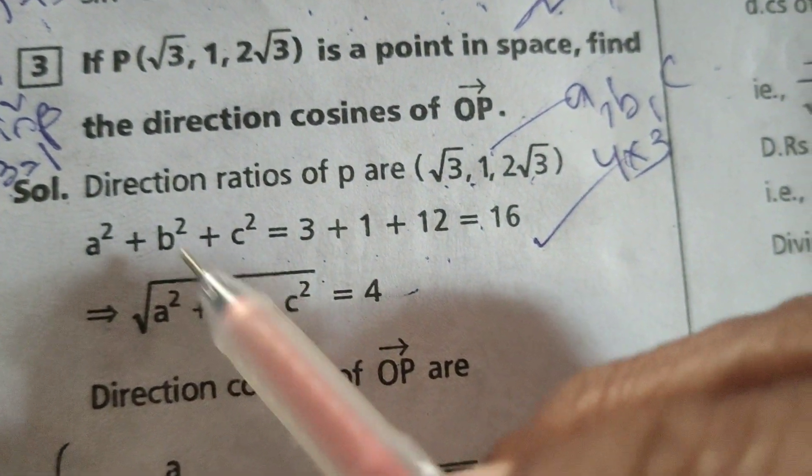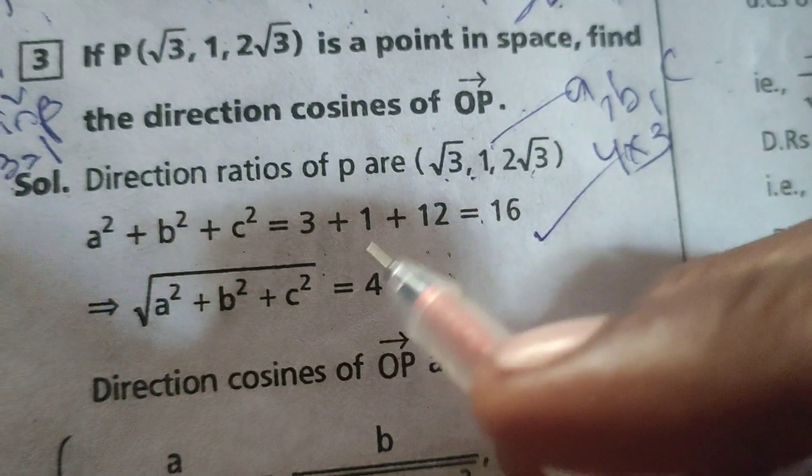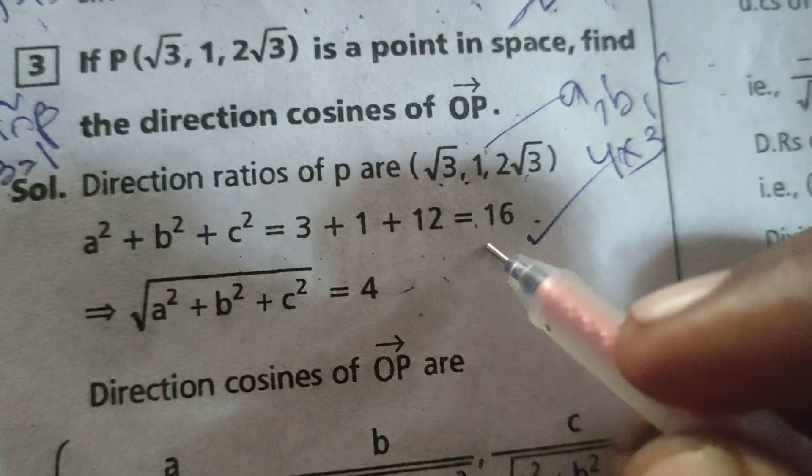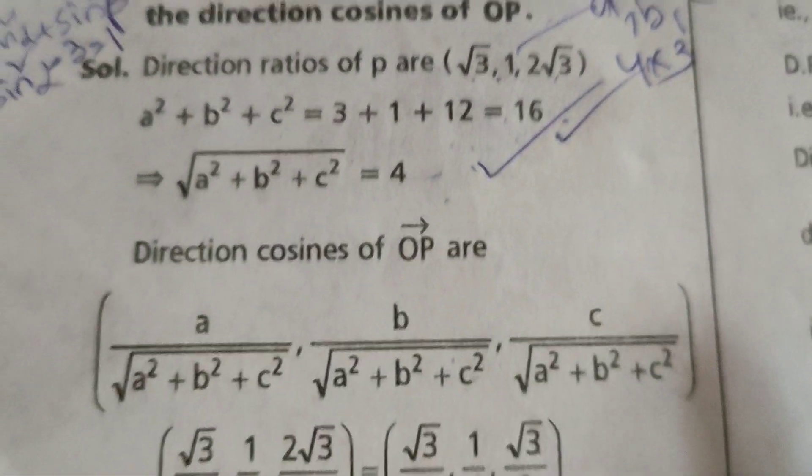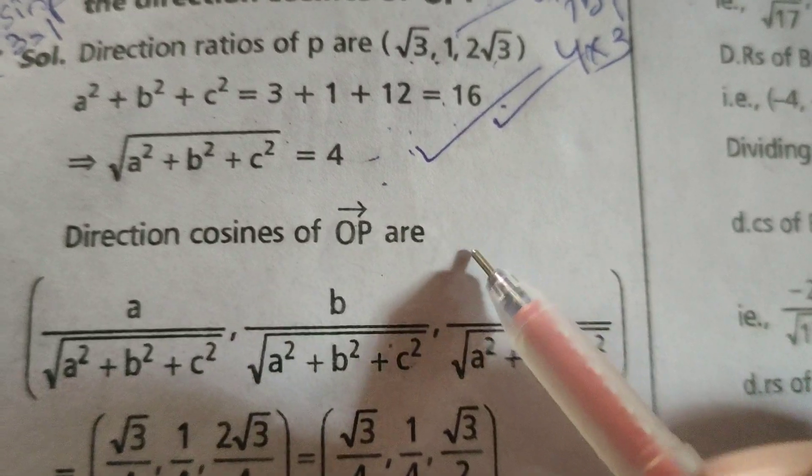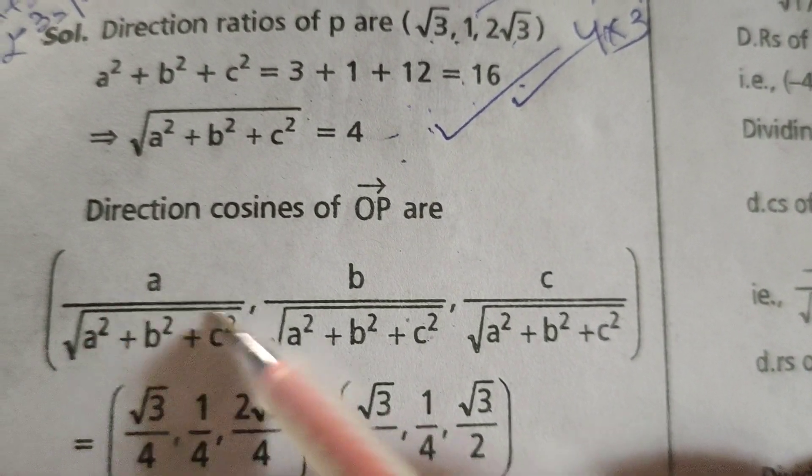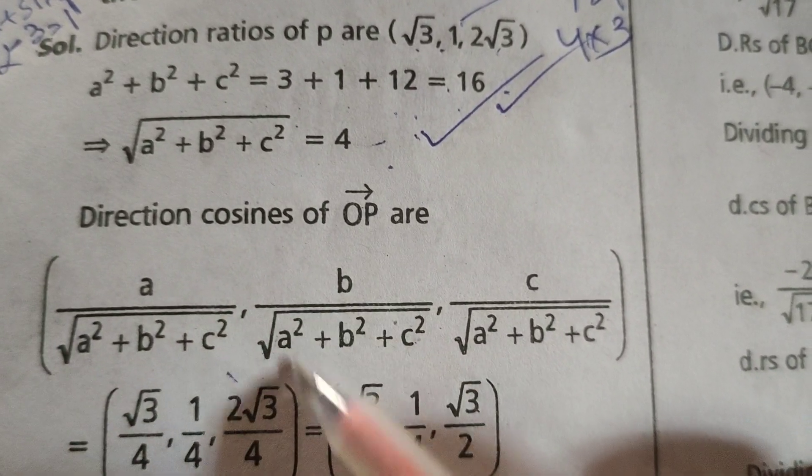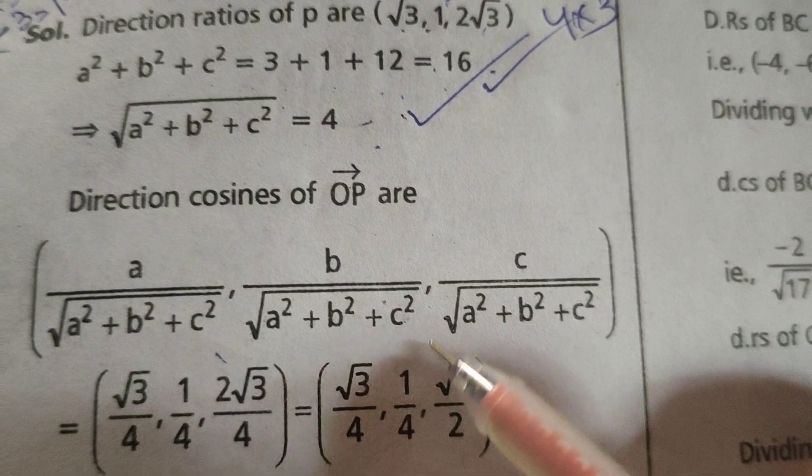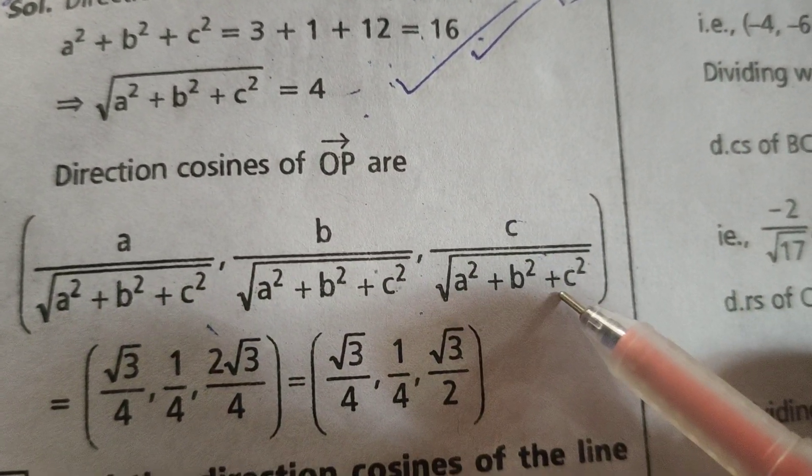Therefore, √(A² + B² + C²) equals √16 = 4. Direction cosines of OP bar: the formula here is A/√(A² + B² + C²), B/√(A² + B² + C²), C/√(A² + B² + C²).